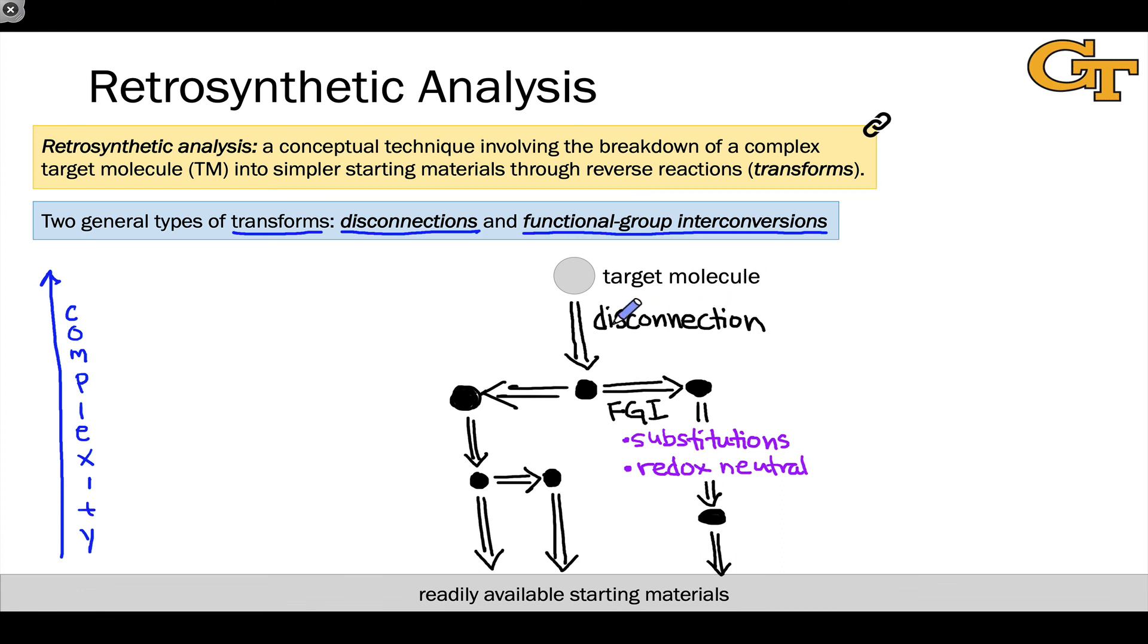In our case, for the purposes of 2311 and 2312, there would usually be a pretty clear single ideal path from the target molecule back to the starting materials and then in the forward direction from the starting materials to the target. And that's because our synthetic toolbox is still relatively limited at this stage.